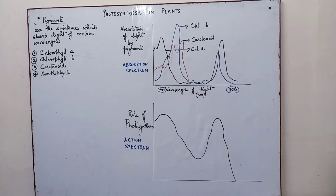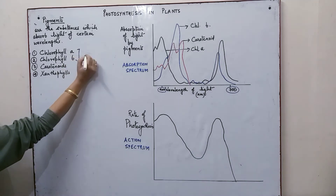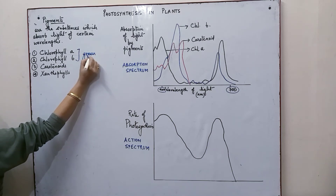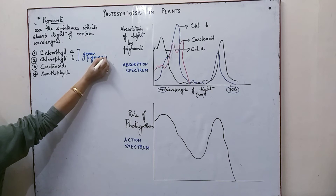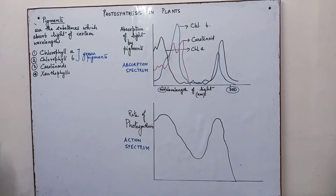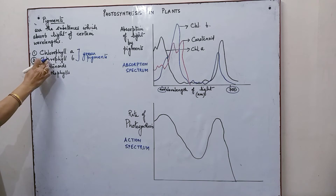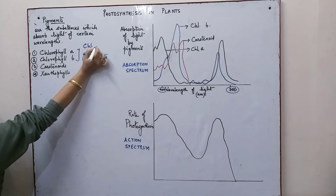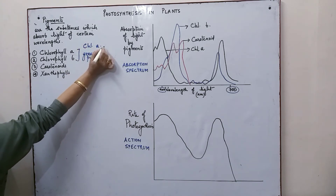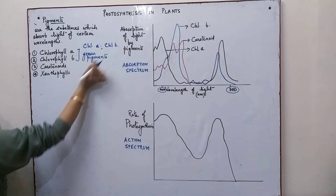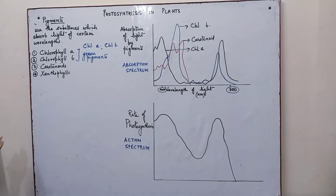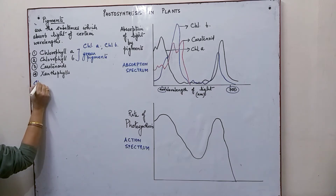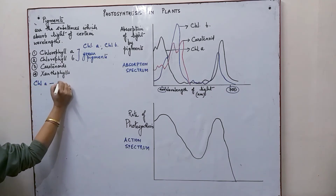Chlorophylls are the green pigments. They play an important role and are very active in the photosynthetic process. They are found in the chloroplast of plant cells and are represented as chlorophyll A and chlorophyll B. They are the main pigments.